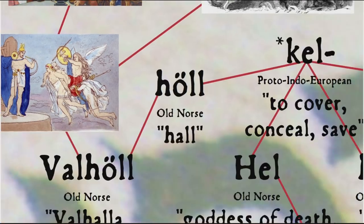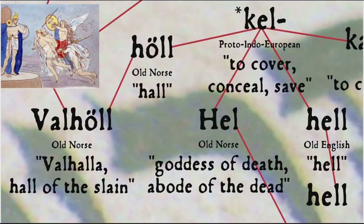The word hell comes ultimately from the Proto-Indo-European root *kel, 'to cover, conceal, save,' also the source of the words conceal, hole, and occult, as well as the words hall and Valhalla. And speaking of Ragnarök, the Norse end of the world, this root *kel is also found in the word apocalypse — the Christian end of the world — from Greek apo, 'off, away from,' and kaluptein, 'to cover, conceal.'